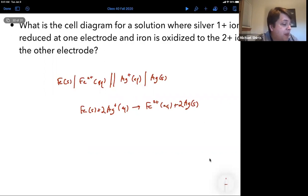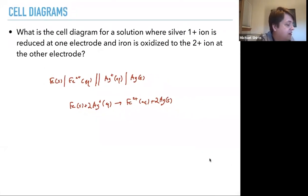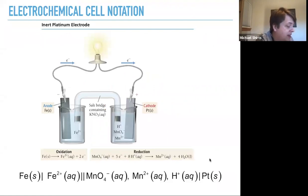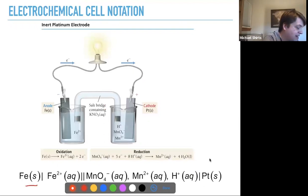So that is how you draw a cell diagram and what the reaction is that is equivalent to that cell diagram. If we have an inert platinum electrode in this situation, then what it would be is that we've got solid iron on one side and then the electrolyte, the Fe2+ aqueous, the double line indicating the two separate cells.